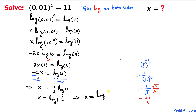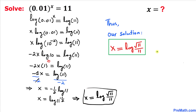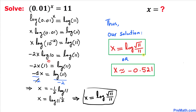Therefore we replace 11 to the power negative 1 over 2 with square root of 11 divided by 11. So our x value turns out to be log of square root of 11 divided by 11. Using a calculator, x is approximately equal to negative 0.521. Thanks for watching and please don't forget to subscribe to my channel for more exciting videos.